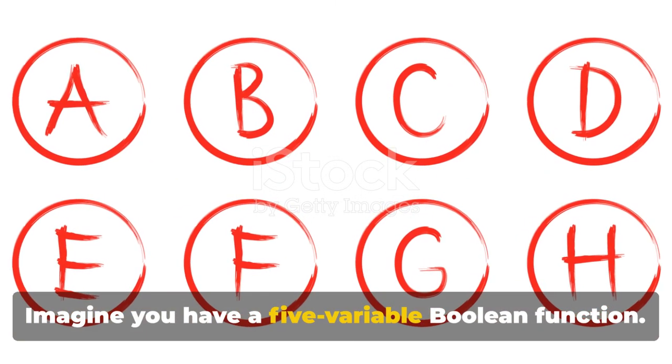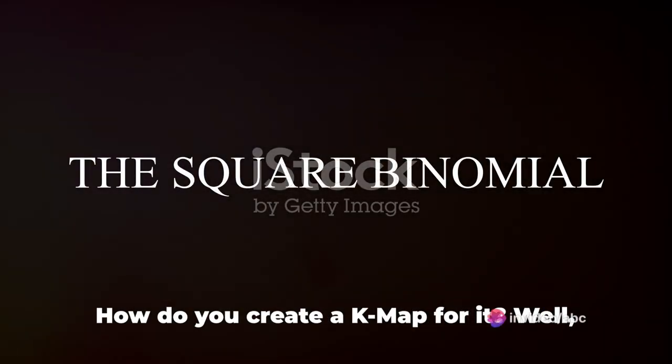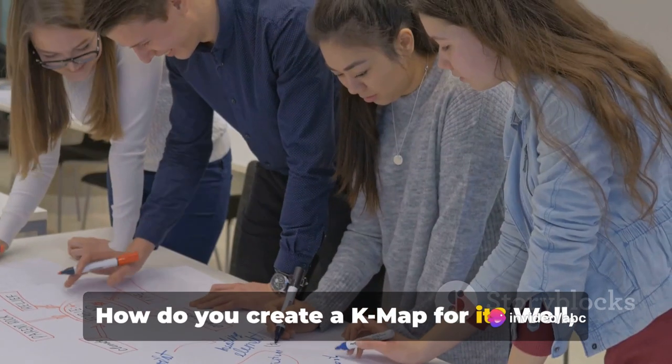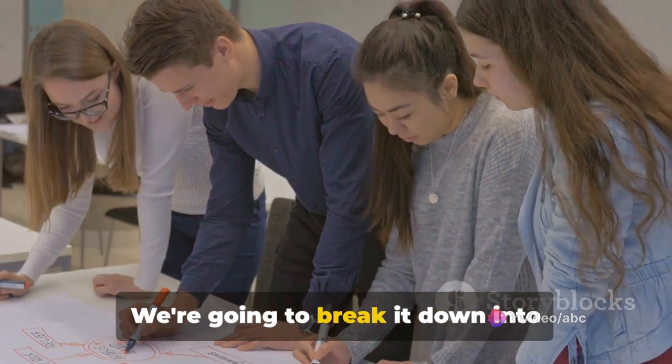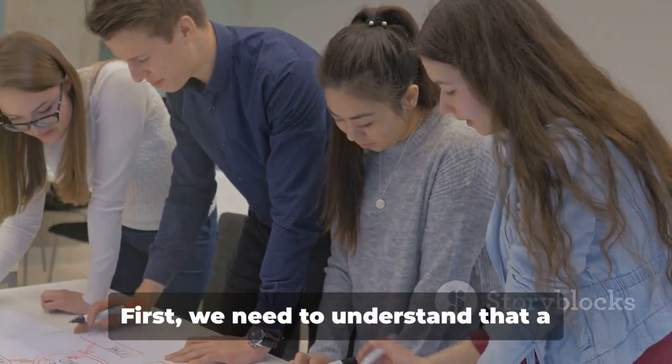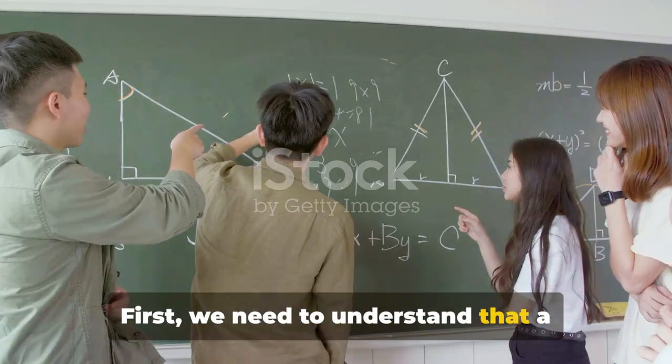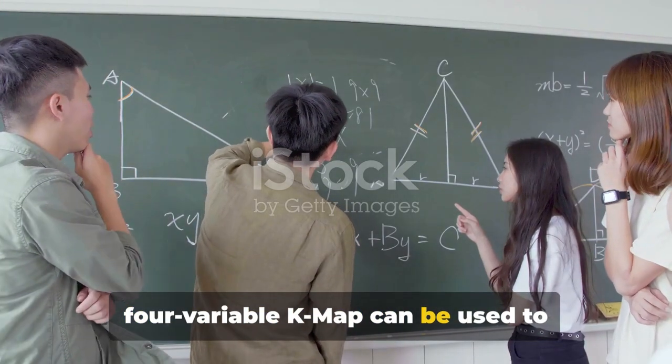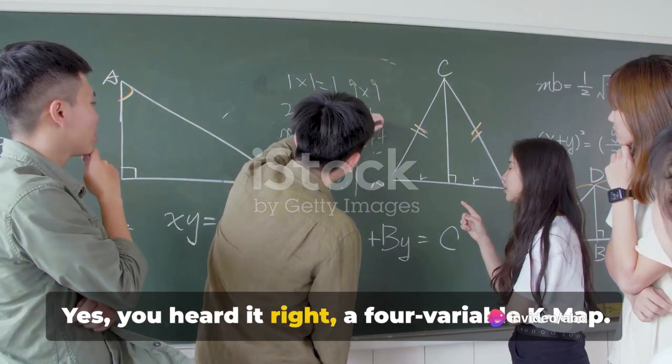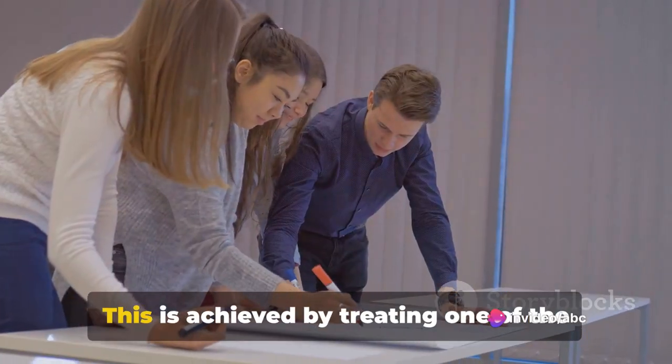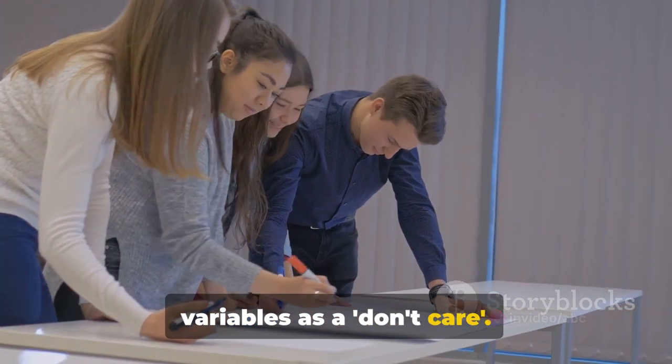Imagine you have a 5-variable Boolean function. How do you create a K-Map for it? Well, it's not as daunting as it may seem. We're going to break it down into manageable steps. First, we need to understand that a 4-variable K-Map can be used to represent a 5-variable function. Yes, you heard it right, a 4-variable K-Map. This is achieved by treating one of the variables as a don't care.